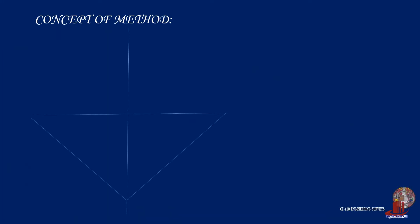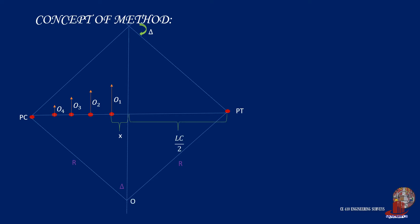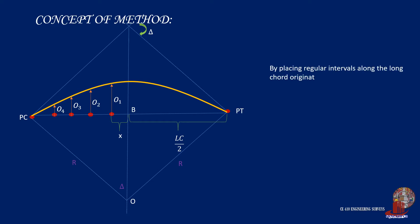The long cord is crucial in staking out the simple curve using this method. Equal intervals would be ideal and they are measured from the center of the long cord moving outwards to the end. Perpendicular offsets are drawn from the long cord where the lengths would be measured, and the end points will be staking the curve.